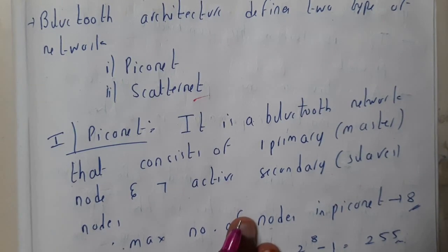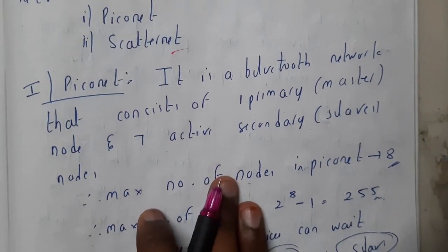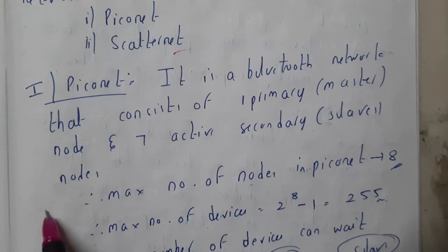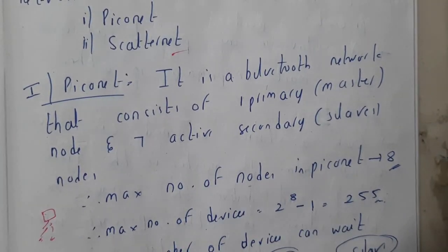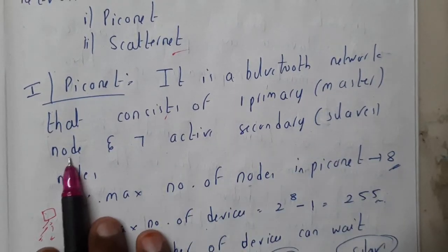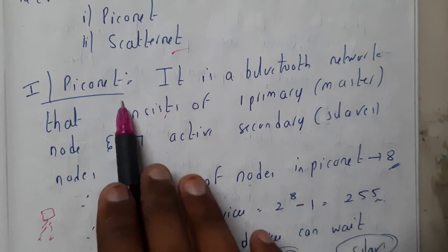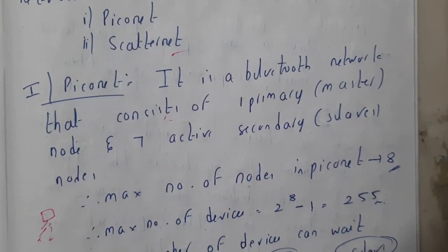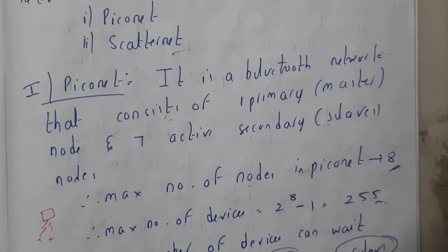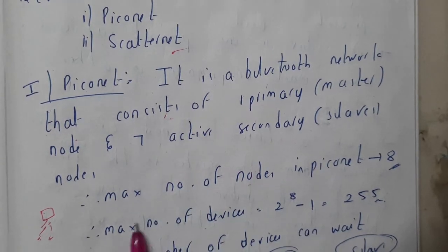The first type is piconet. From a single device you will be sending the data to multiple devices. It is a Bluetooth network that consists of one primary, that is nothing but one master, and it can have a maximum of seven active secondary slaves or secondary nodes. So it can have totally eight active nodes — one will be the primary and seven will be the secondary.